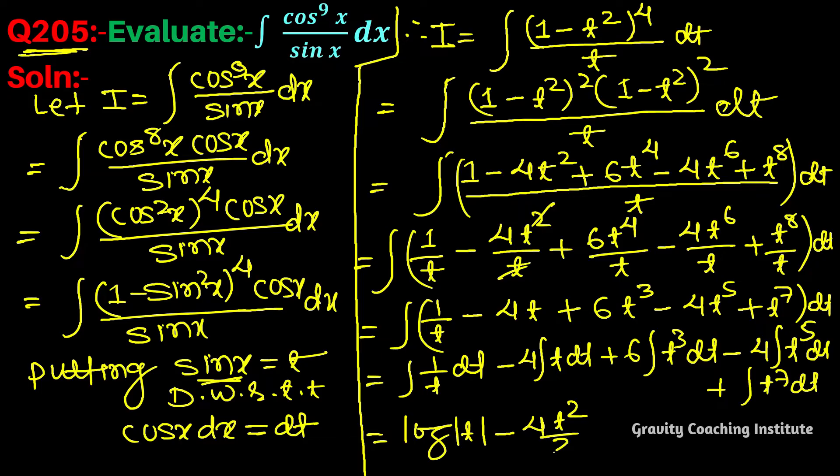Plus 6 t to the power 4 by 4 minus 4 t to the power 6 by 6 plus t to the power 8 by 8 plus c. 2 se cancel karenge, so it becomes minus 2 t square plus 3 t to the power 4 by 2 minus 2 t to the power 6 by 3.